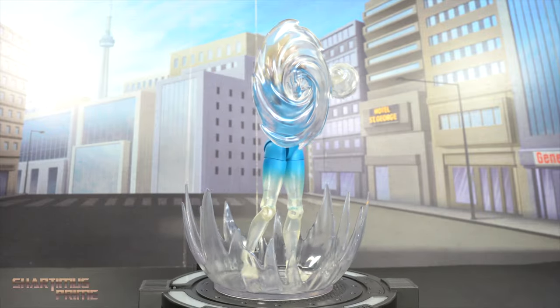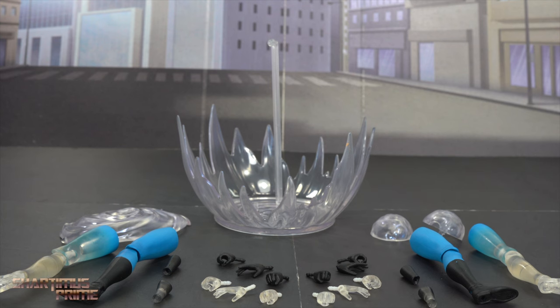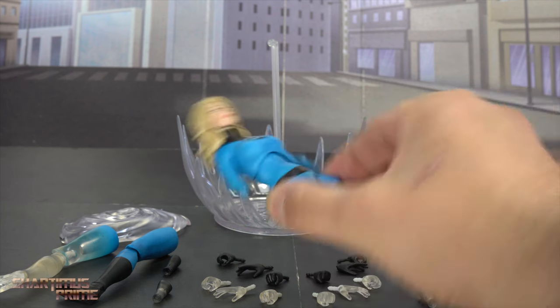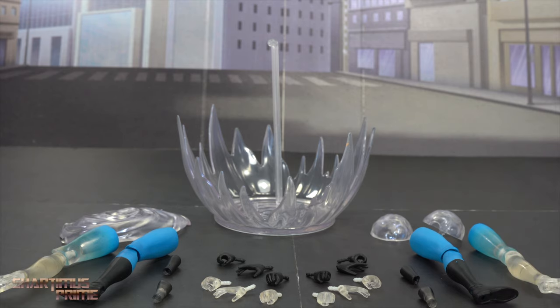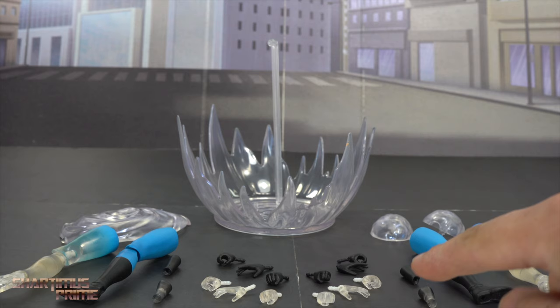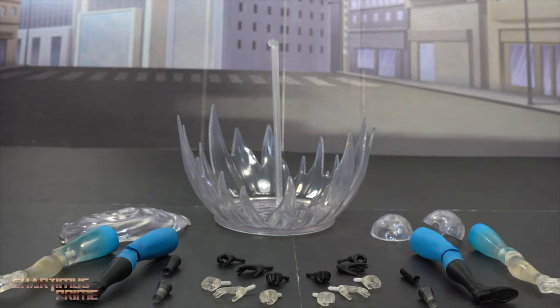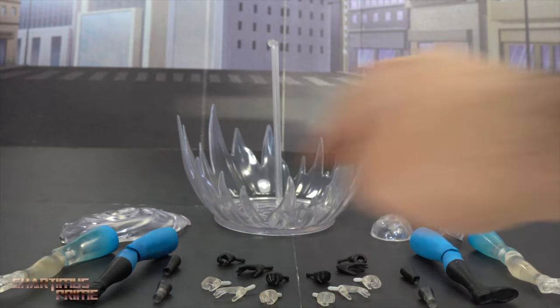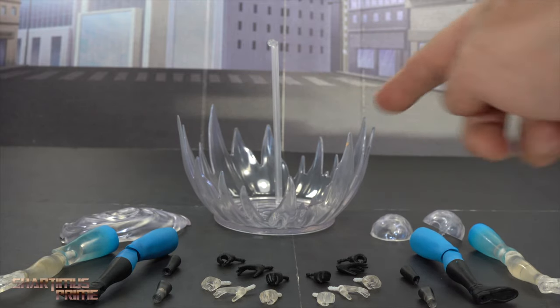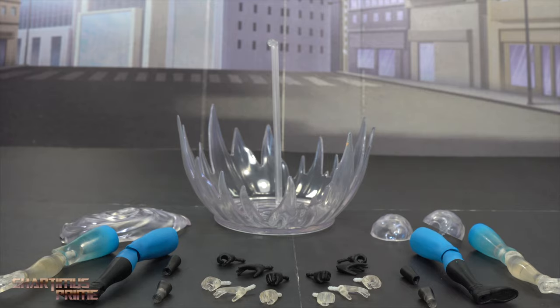So here's all of the accessories, and it's so weird seeing Sue all ripped apart like that. You can see we get the two sets of legs, two sets of forearms, three sets of interchangeable hands for the Invisible Mode, three opaque hands, two different Invisi effects for her hands, and one base right here, which we'll talk about more in a second.